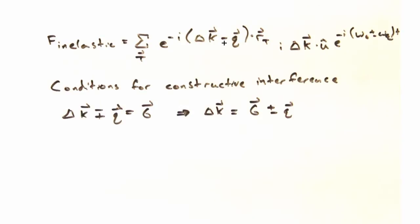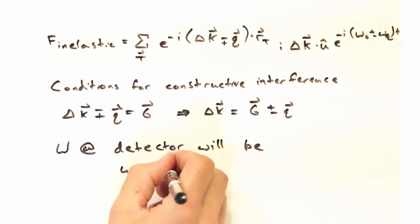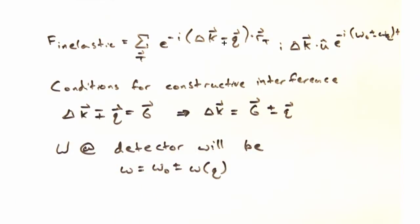And the frequency at the detector, when we do this, is going to be the original frequency, plus or minus the frequency of the phonon associated with q.